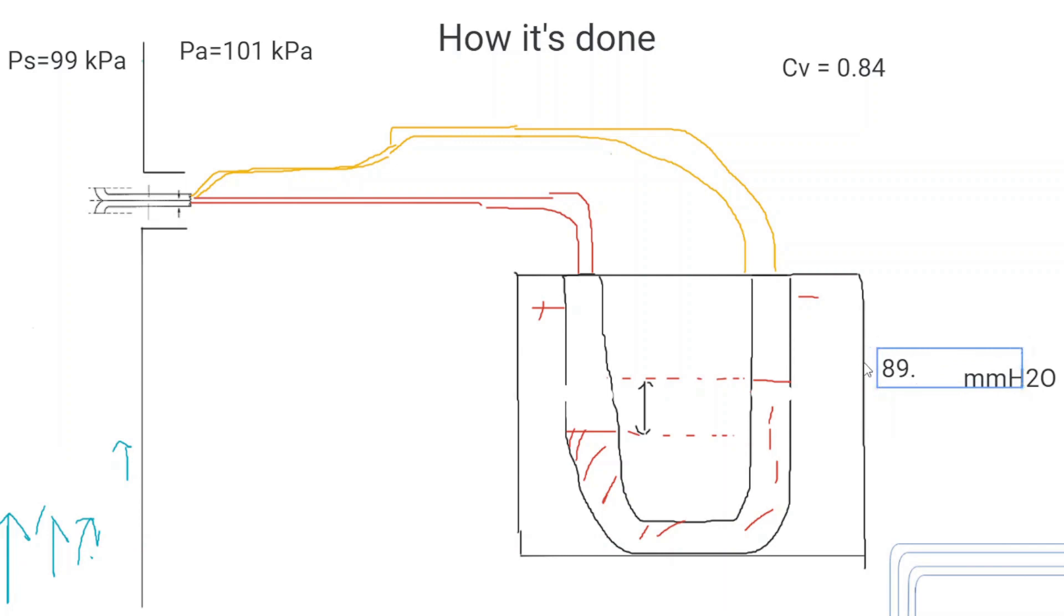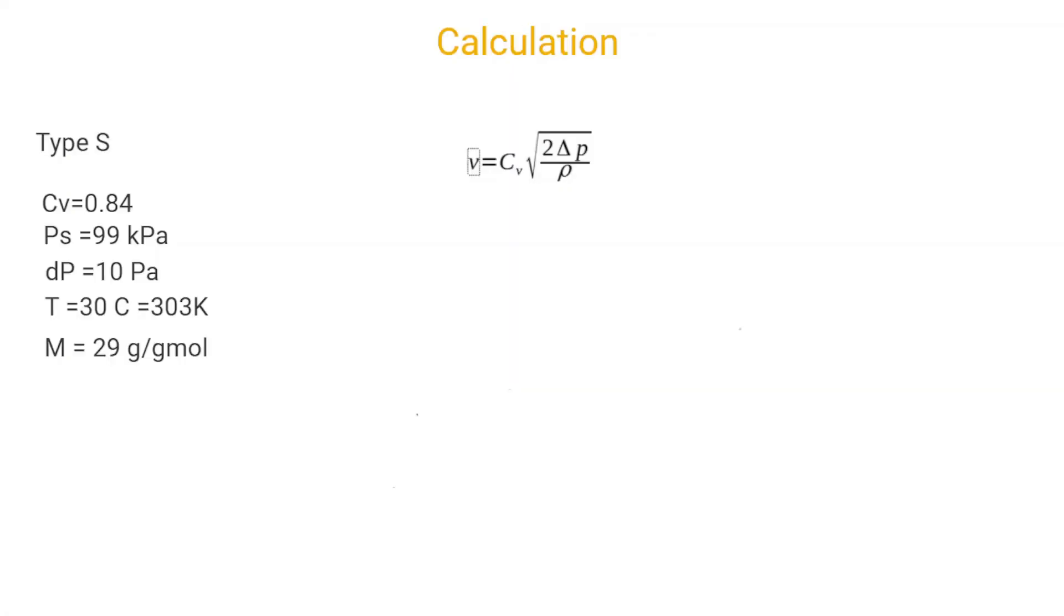Now why is that? That is because the static pressure leg on the type s pitot tube is slightly disturbed by the eddies and the current at the back of this probe over here and that is compensated for when you do the actual calculation by using a different cv value in your equation. The type 1 is a more direct measurement or closer to the working principle of it the type s has a little correction factor built into it but the reason we use the type s more often is because they are less prone to blockages. Those little static holes on a type 1 get blocked rather easily.